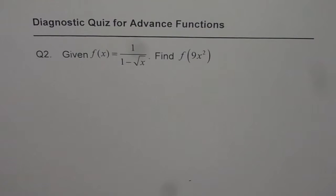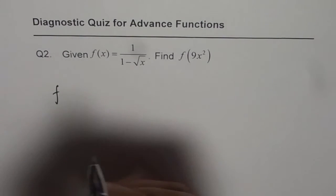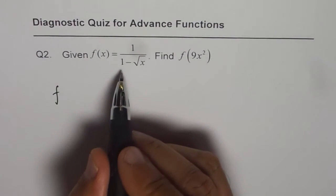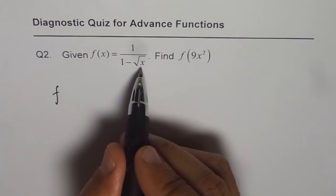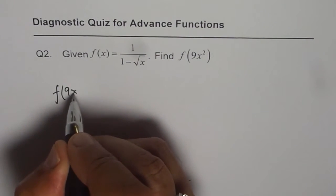Now this is a very important question and there is an important concept to understand. So let us do it. f of x equals 1 over 1 minus square root of x. What is f of 9x squared? This is what we need to figure out.